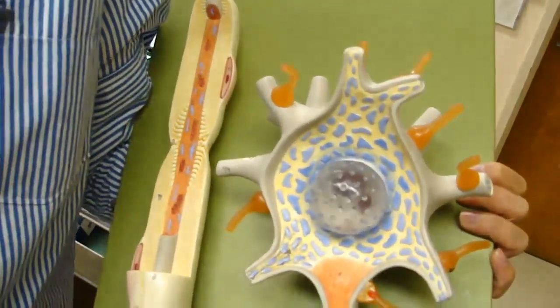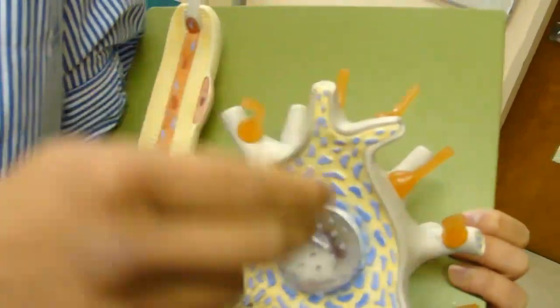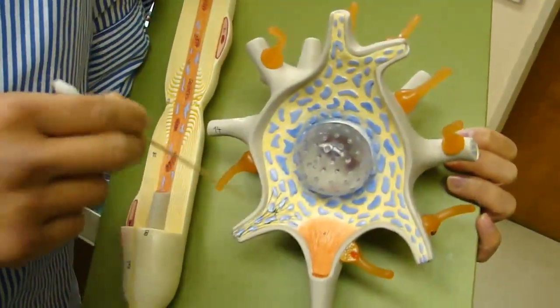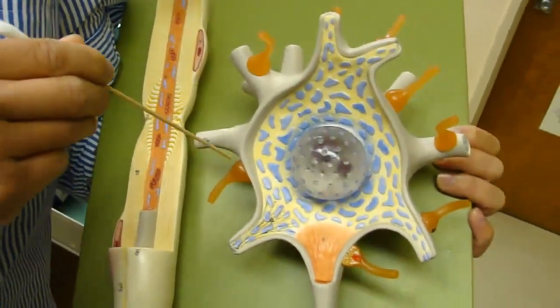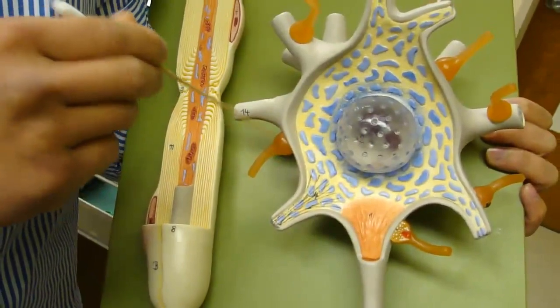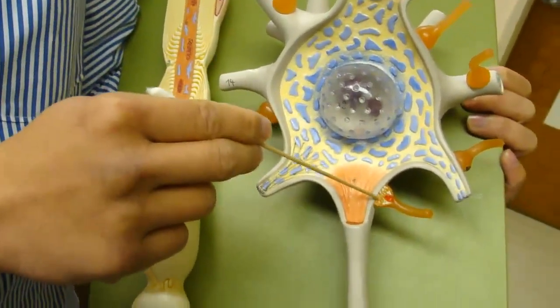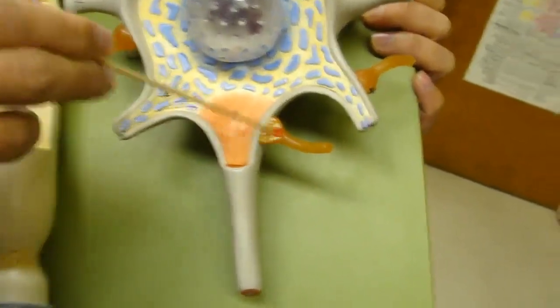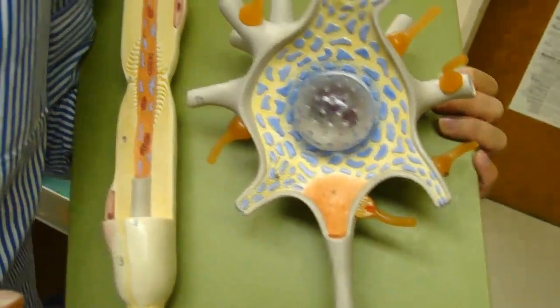And these right here are the axon terminals of the previous neurons and right there is the axon terminal button or bouton and you can see that right there represents a synapse, a chemical synapse. So the two neurons communicate together by the neurotransmitter.